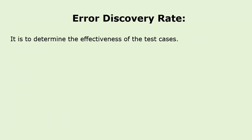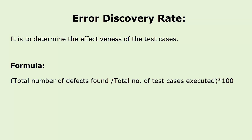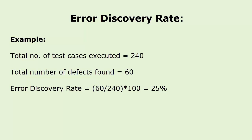Error discovery rate: it is used to determine the effectiveness of the test cases. The formula is: total number of defects found divided by total number of test cases executed, multiplied by 100. Here goes an example on error discovery rate matrix.